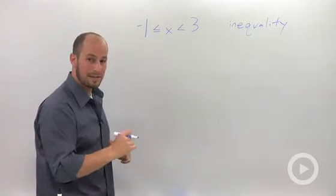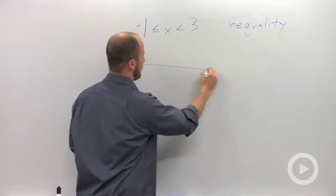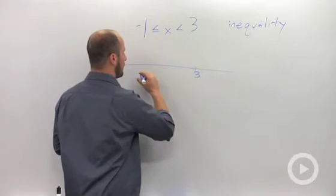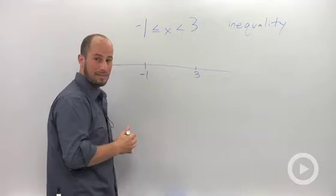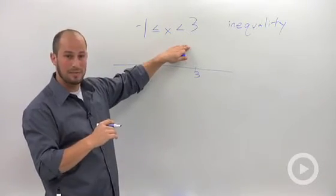Another way we could represent the same exact data is on a number line. We have the point 3, we have the point negative 1. So what this is saying is x is between these two numbers.